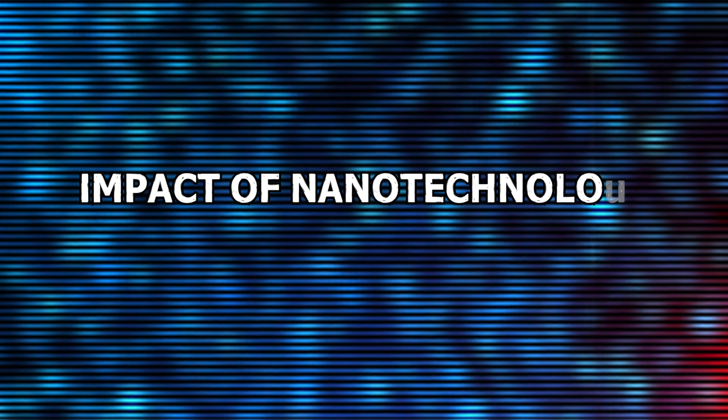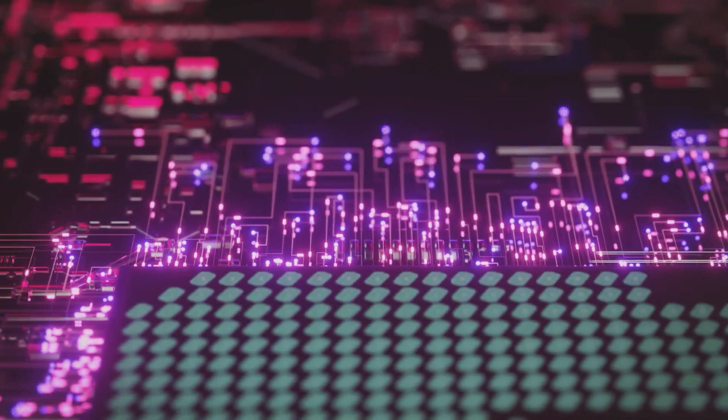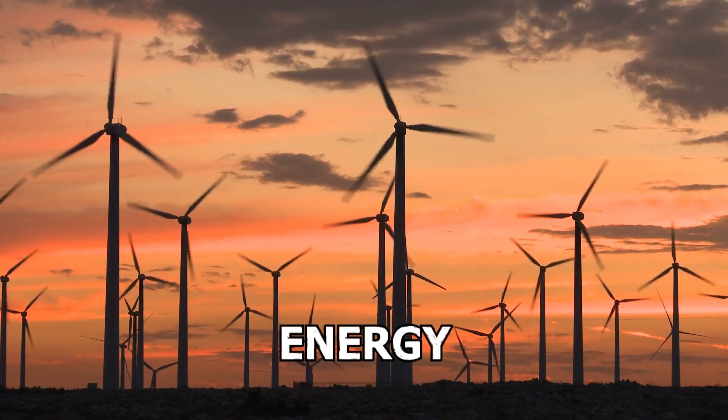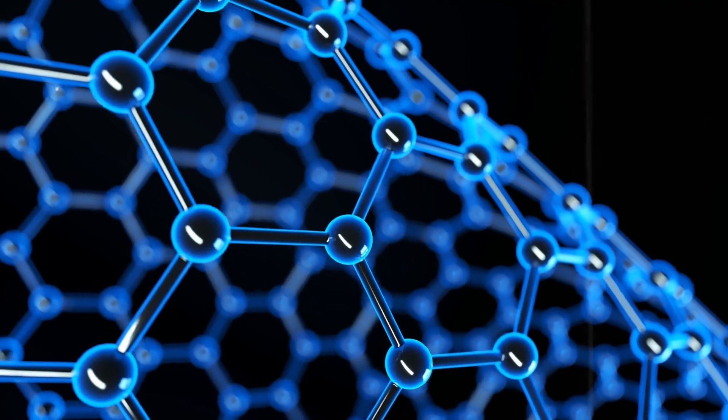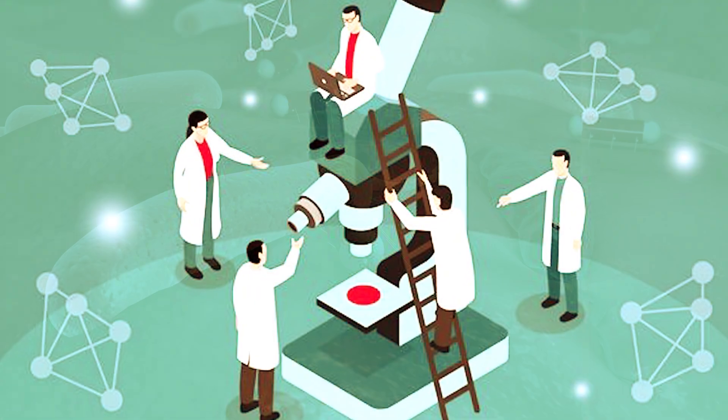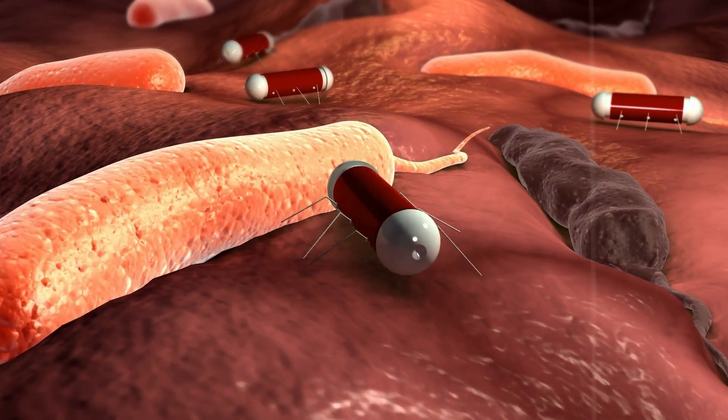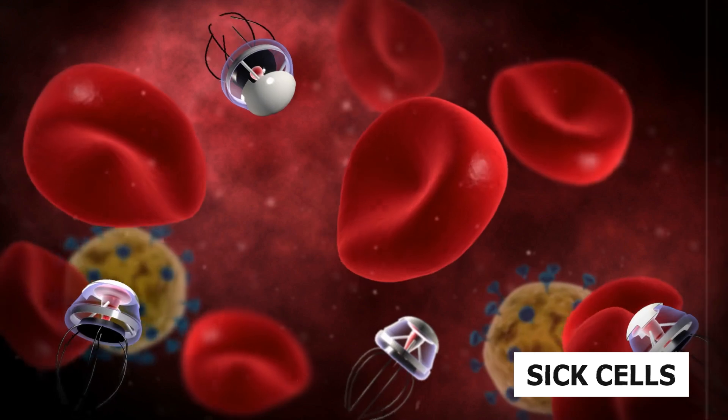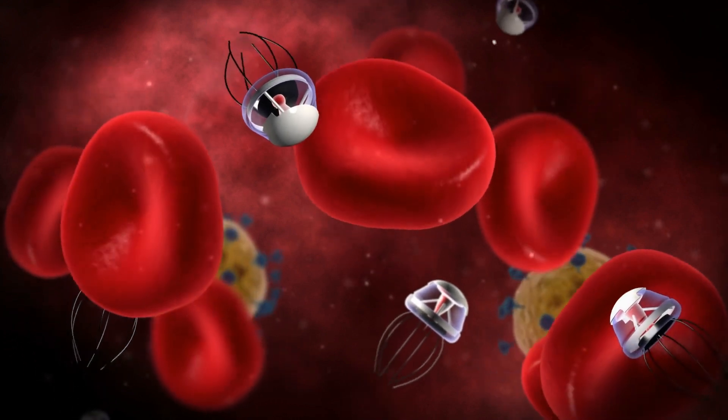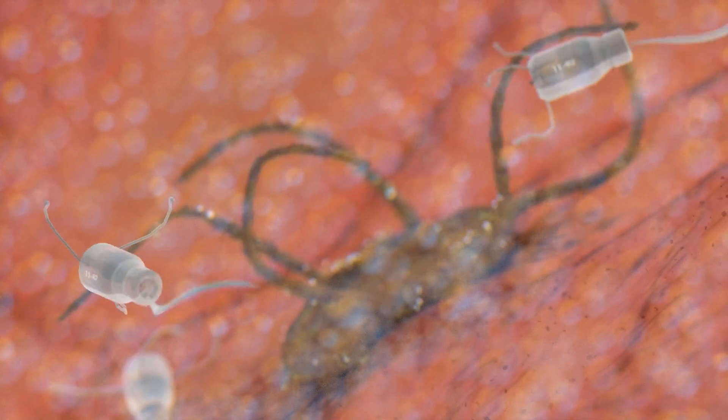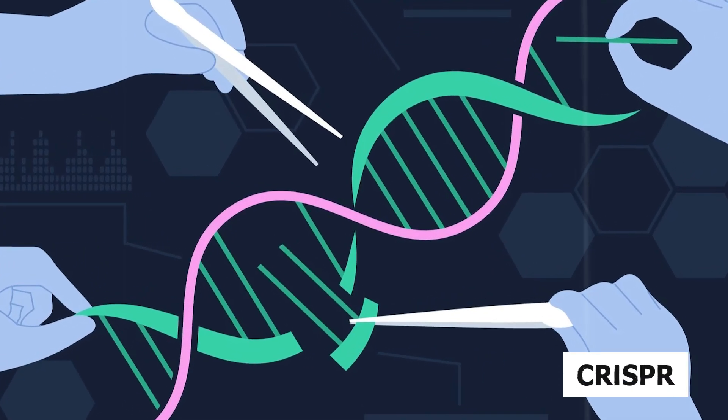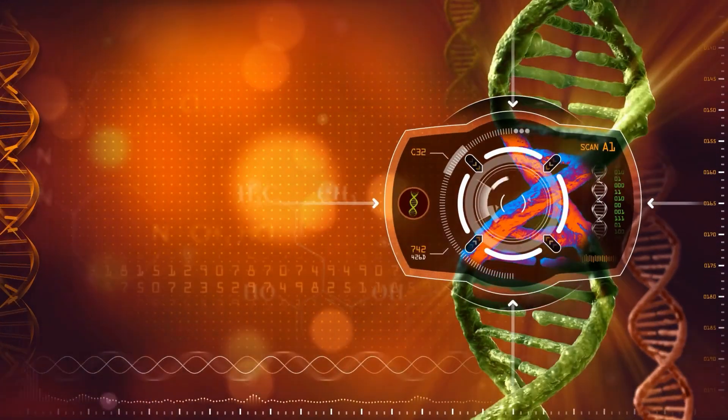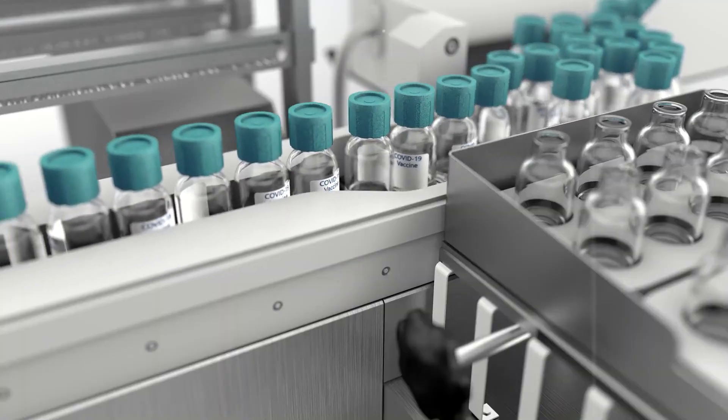Nanotechnology is changing the game in many areas: health, energy, farming, and even our clothes and food. Think of it like tiny tools and workers that can do really specific jobs. In medicine, these tiny helpers can target sick cells without harming the healthy ones, making treatments like cancer drugs work better and with fewer side effects. There's also this super cool tool called CRISPR that can edit genes, helping fight diseases and develop vaccines faster.